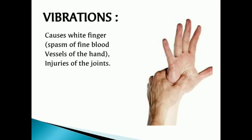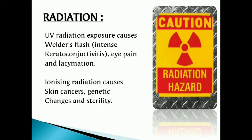Vibrations cause white fingers — that is, spasm of the fine blood vessels of the hand — and also injuries of the joints. UV radiation exposure causes welder's flash, that is, intense keratoconjunctivitis, eye pain, and lacrimation. Ionizing radiation causes skin cancers, genetic changes, and sterility.